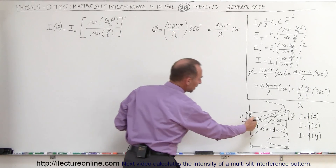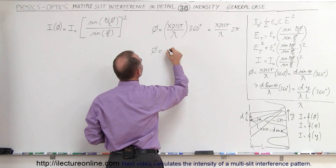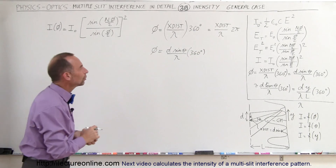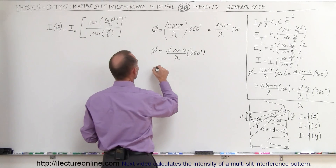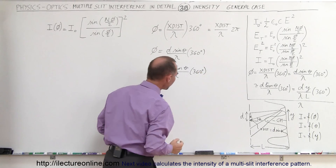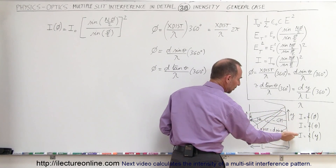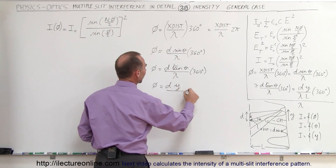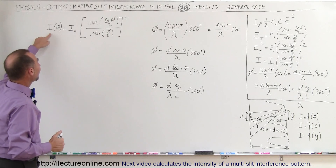The extra distance traveled is equal to the distance between the slits d times the sine of the angle theta, which is the look angle. So the phase angle equals d times sine of theta divided by the wavelength, times 360 degrees. Since the look angle is usually very small, sine of theta equals tangent of theta. By the definition of tangent as rise over run, tangent equals the height above the central maximum Y divided by the distance to the screen L. Therefore, the phase angle can be written as d times Y divided by lambda times L, times 360 degrees.